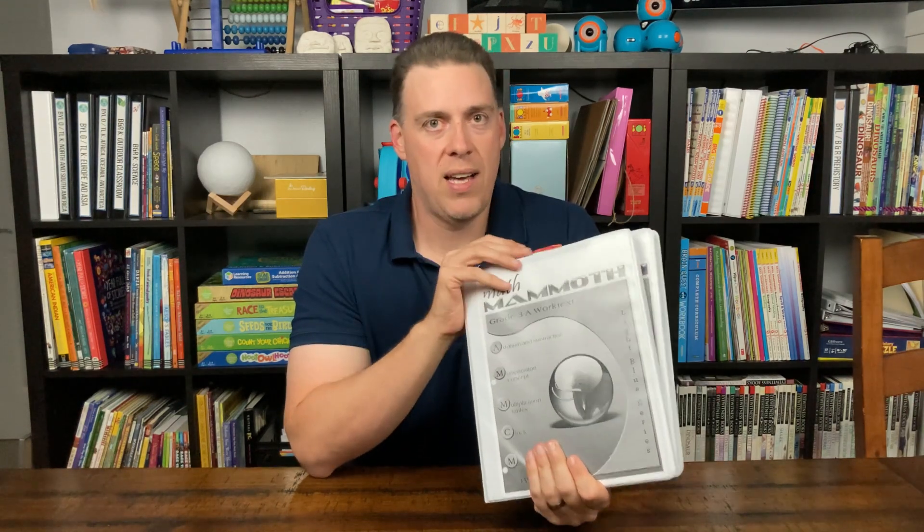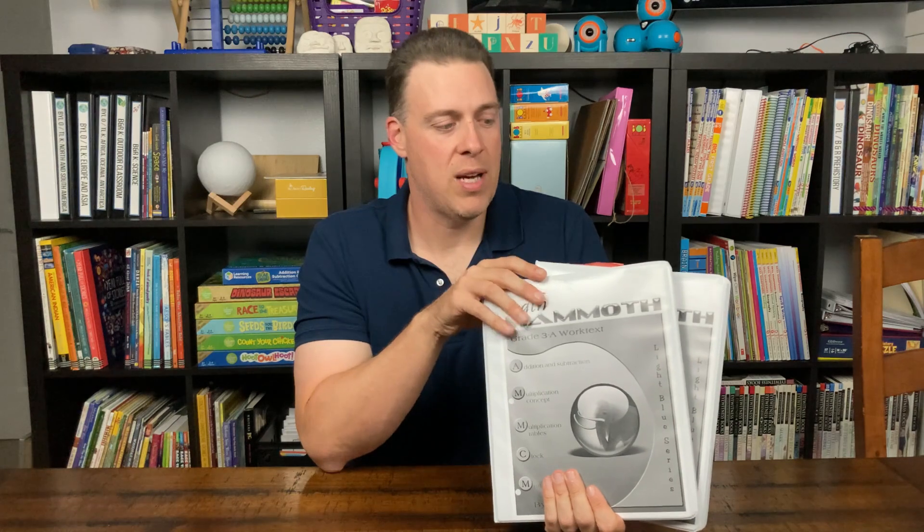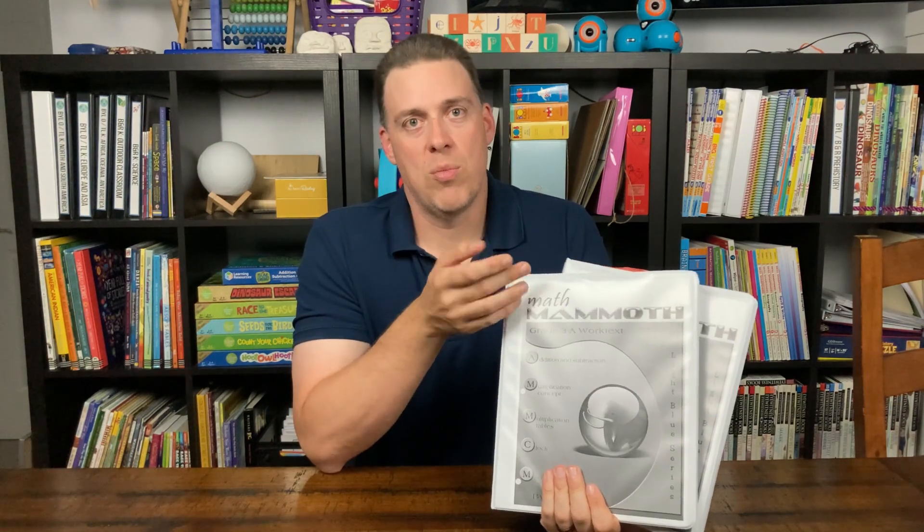I love the price point about 50, 60 bucks for the entire section. If you get the digital curriculum and you have multiple children, especially if it's your first child and you got one in the wings coming up like I do. It's great to have the digital versions that you can print off and amortize that cost across multiple children. That's a really nice thing.